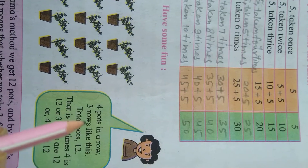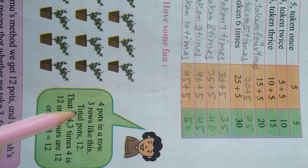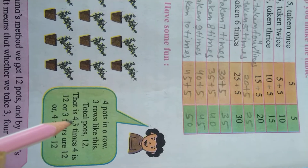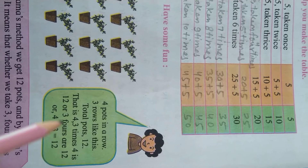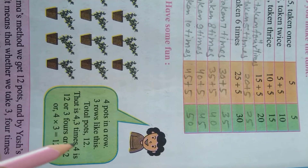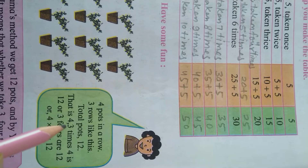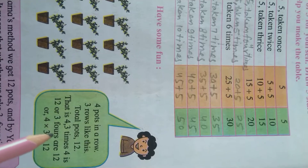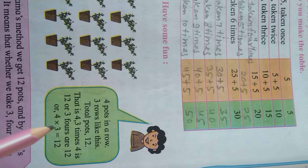4 taken 3 times is 12. Or 3 fours are 12. Or 4 multiplied by 3 equals 12.